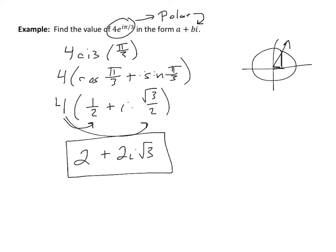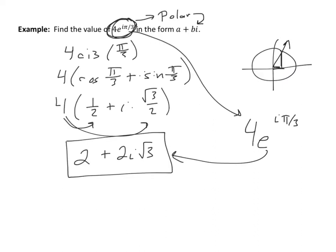Keep in mind, now that you know where the i button is on your calculator, you could actually take this and punch it in. You can do 4·e to the i·pi/3, and it'll give you a decimal version of this, which allows you to check it.